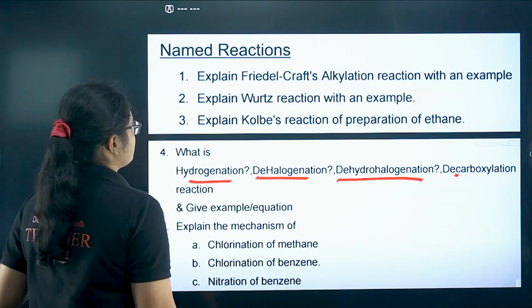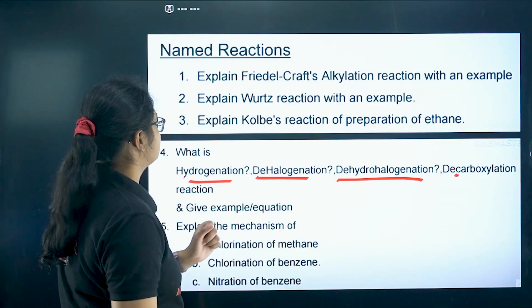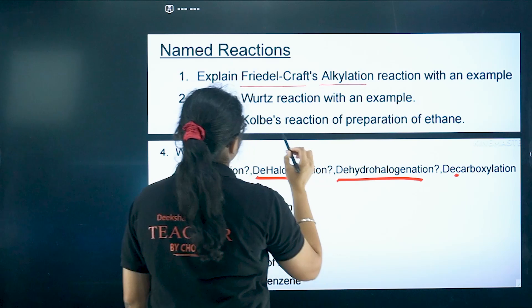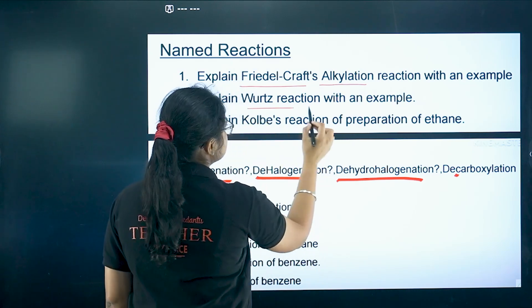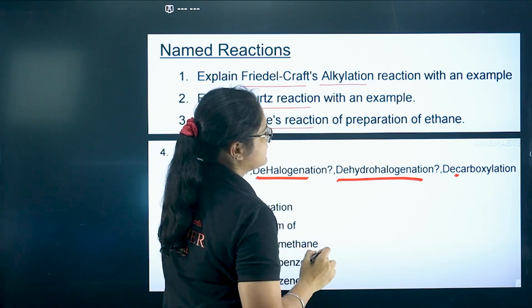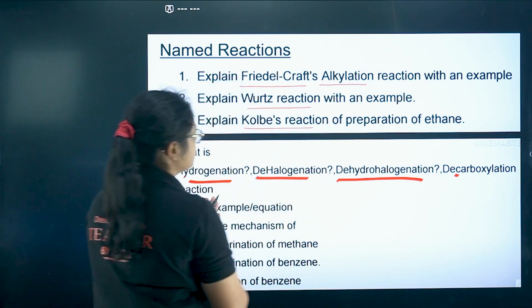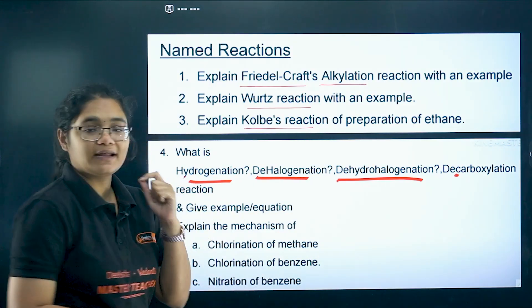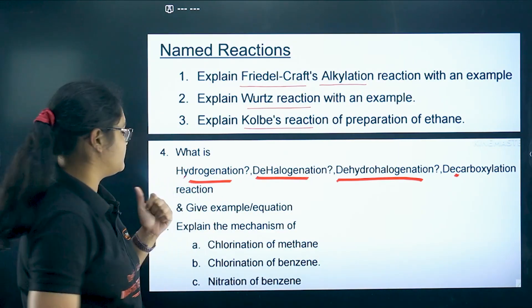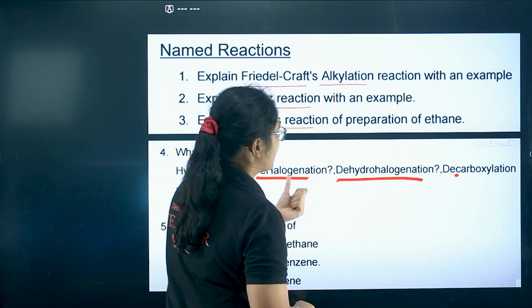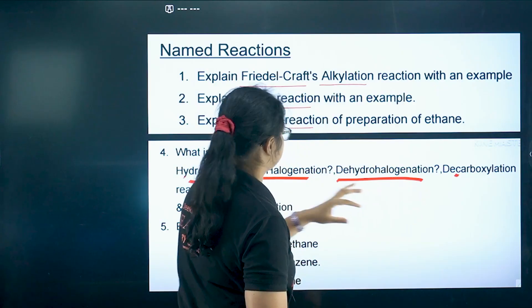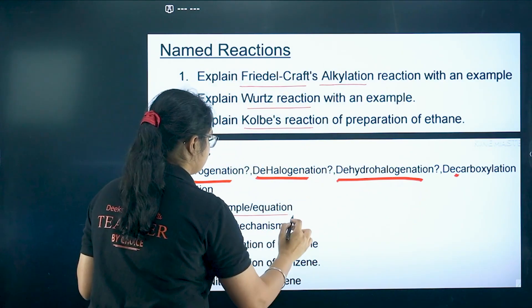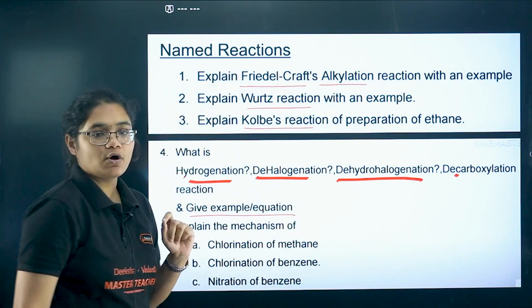Now moving forward to Hydrocarbons. First, name reactions: Friedel-Crafts acylation, Friedel-Crafts alkylation, Wurtz reaction, and Kolbe's reaction. Next, more name reactions you need to prepare: hydrogenation, dehalogenation, dehydrohalogenation, and decarboxylation — you have to write them with examples or equations.